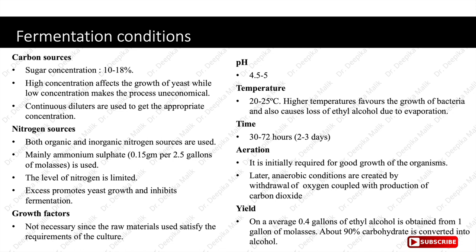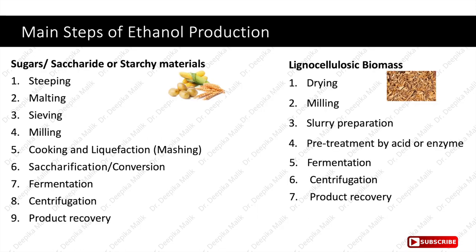The main steps involved in ethanol production from sugary or starchy raw materials include: steeping, malting, sieving, milling, cooking and liquefaction (mashing), saccharification or conversion, fermentation, centrifugation and product recovery. For lignocellulosic biomasses, the steps are: drying, milling, slurry preparation, pre-treatment by acid or enzyme, fermentation, centrifugation and product recovery.